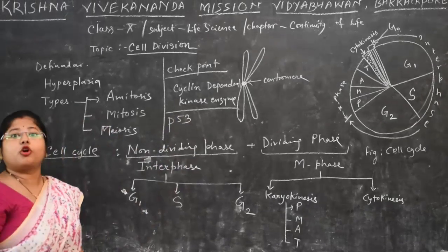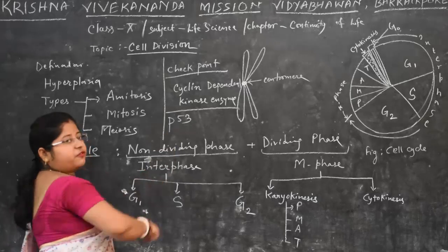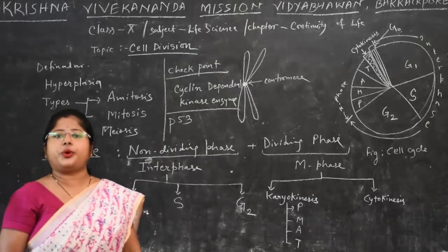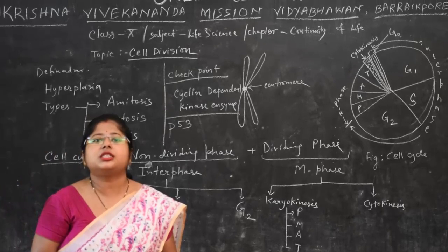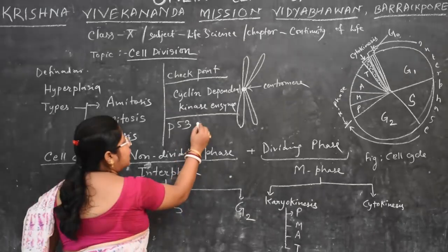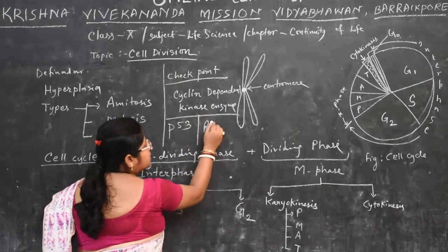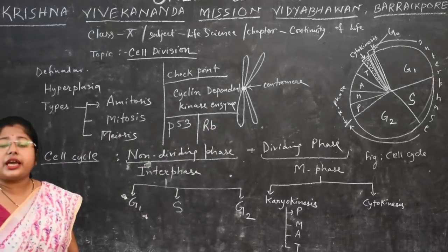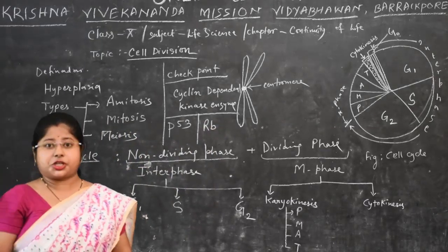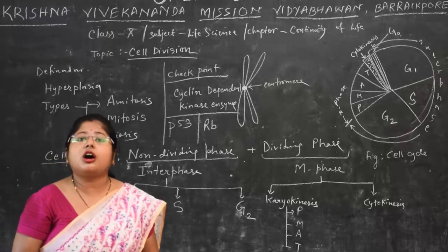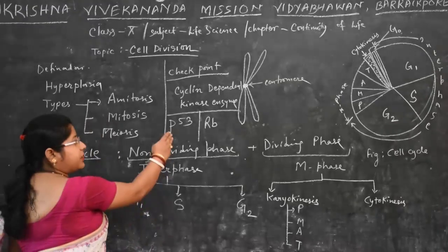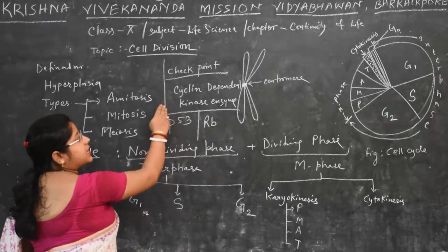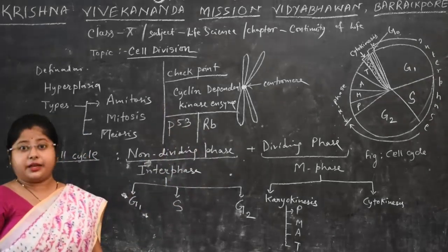P53 protein has a molecular weight of 53 Daltons. We also have retinoblastoma protein. If there is any mutation in the genes controlling the synthesis of P53, retinoblastoma protein, or cyclin-dependent kinase enzymes, there is a high chance of uncontrolled cell division.